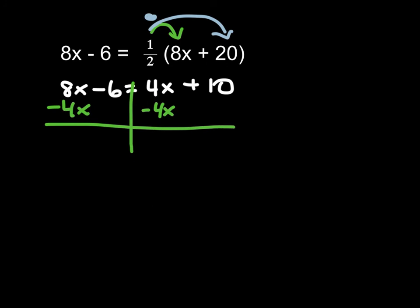8x minus 4x is 4x minus 6 equals 4x minus 4x is 0, plus 10. We don't need to show the plus in this case.